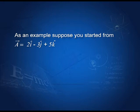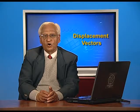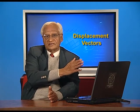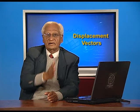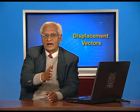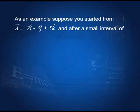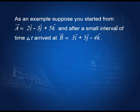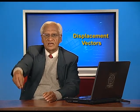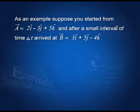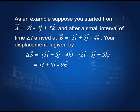Let us take another example. Suppose you started from vector A whose position is 2 i-cap minus 3 j-cap plus 5 k-cap. I hope you remember i-cap, j-cap, k-cap — these are unit vectors along the x, y, and z directions. And vector B is given by 3 i-cap plus 5 j-cap minus 4 k-cap. What is your displacement? Your displacement would be the final position B minus the initial position A. Therefore, ΔS vector equals 1 i-cap plus 8 j-cap minus 9 k-cap.